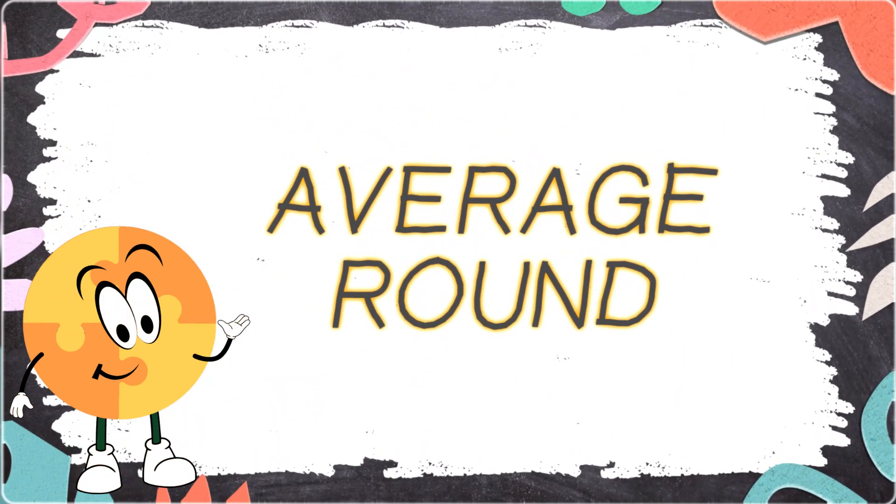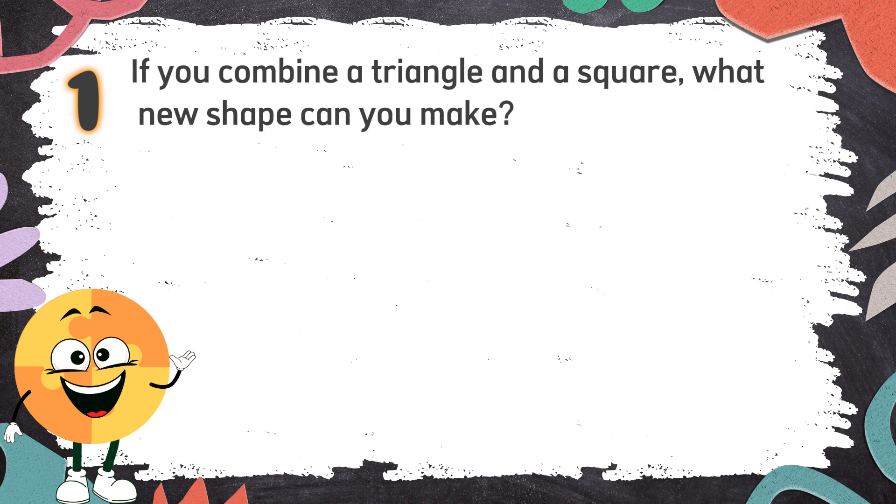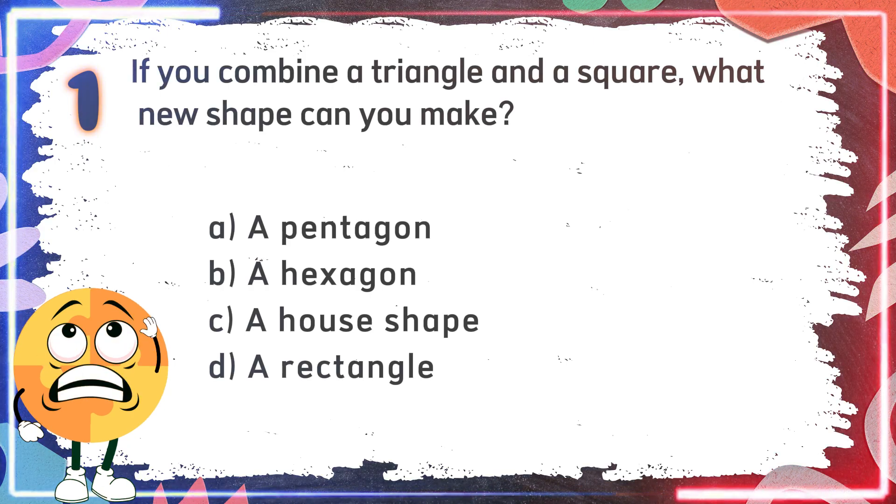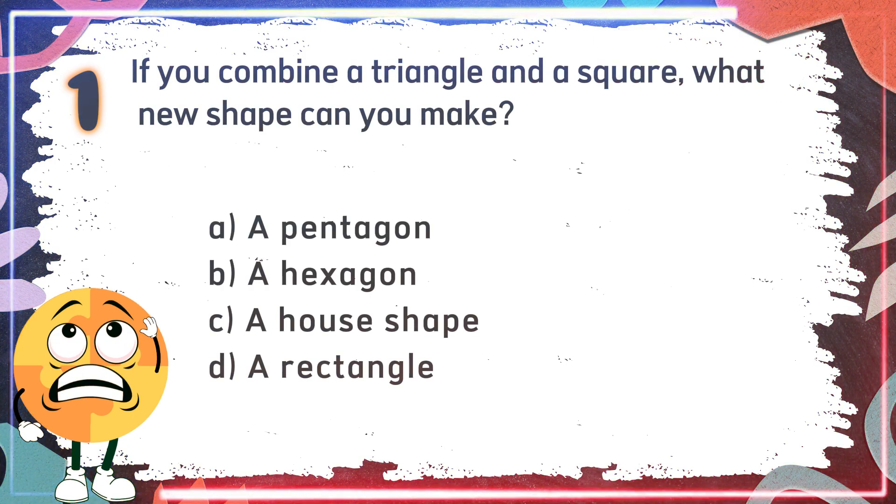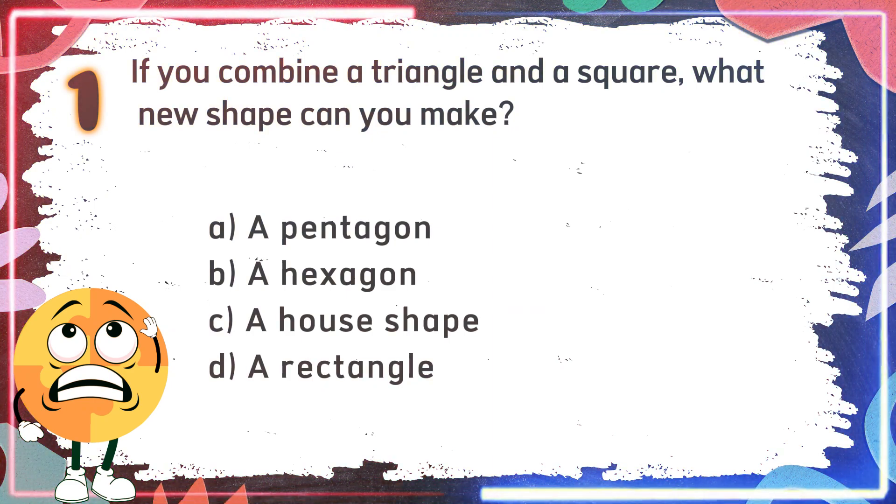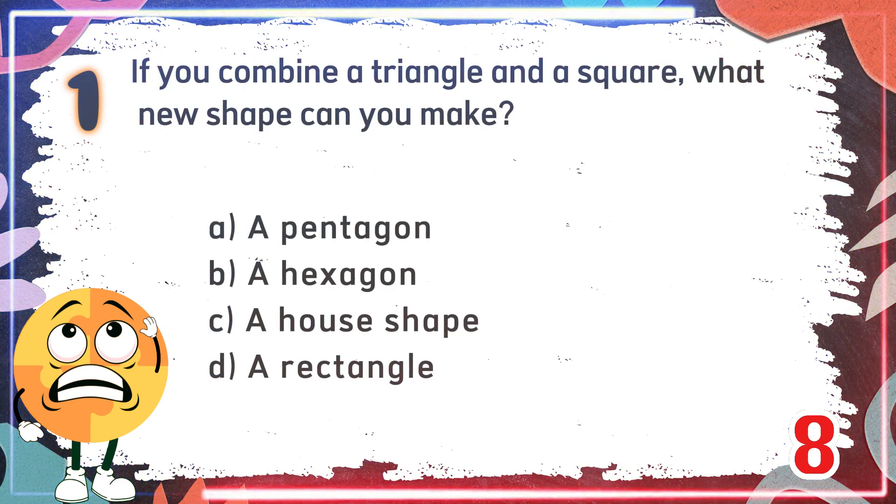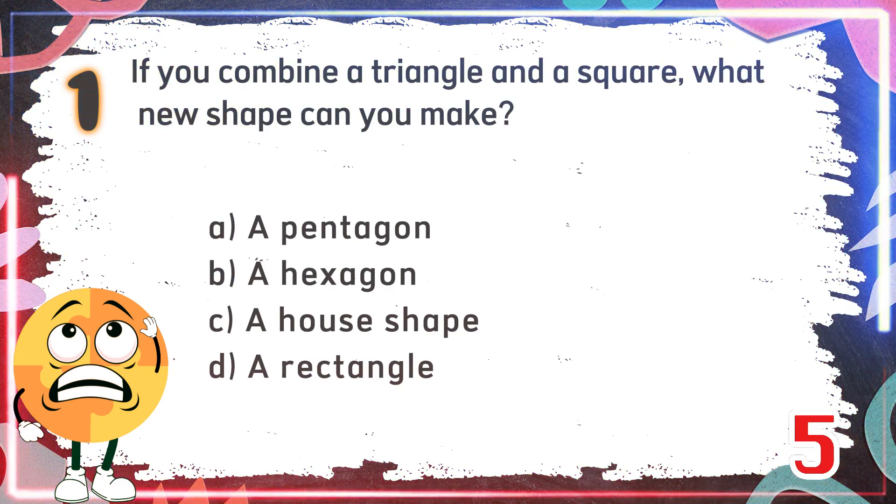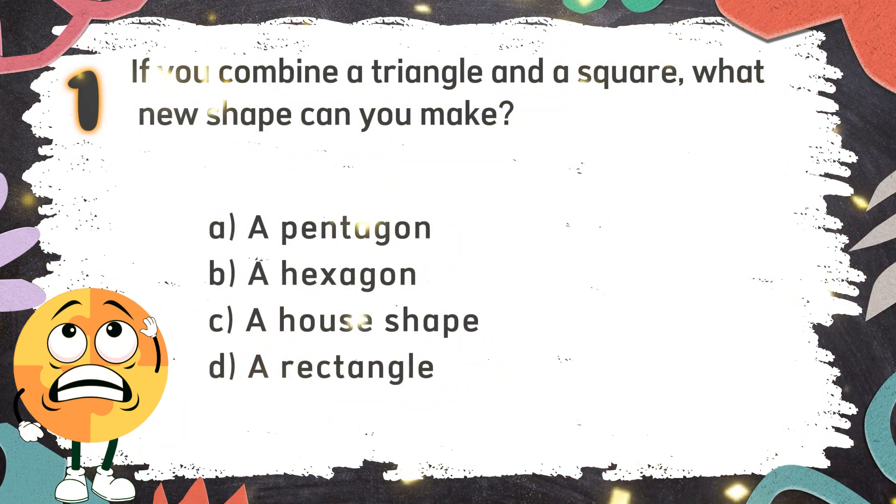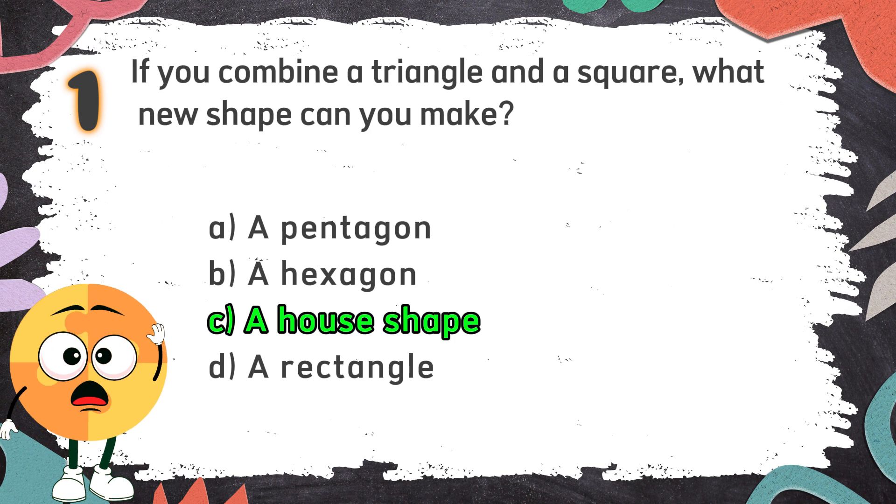Average Round. Number 1: If you combine a triangle and a square, what new shape can you make? The choices are A. A pentagon, B. A hexagon, C. A house shape, D. A rectangle. The correct answer is C. A house shape, depending on how they are combined.